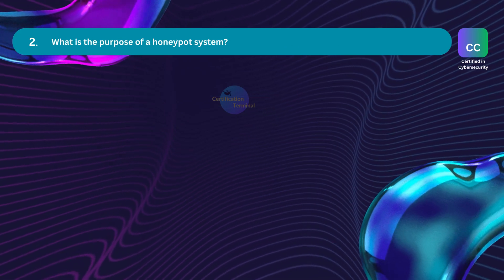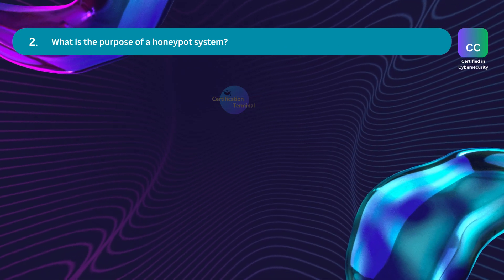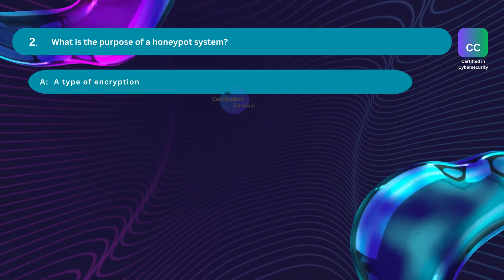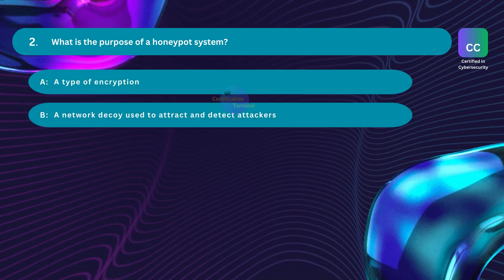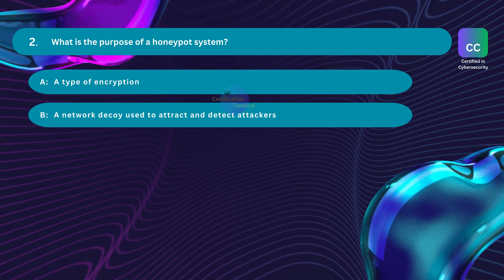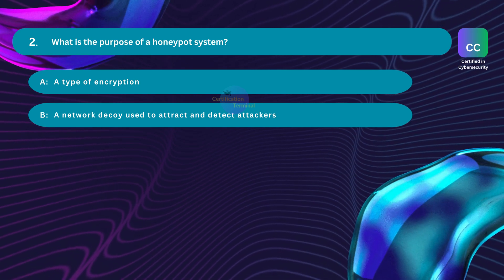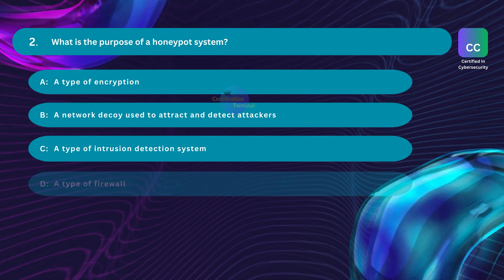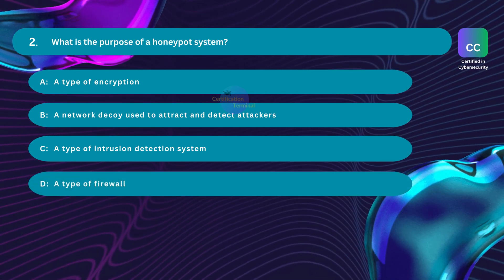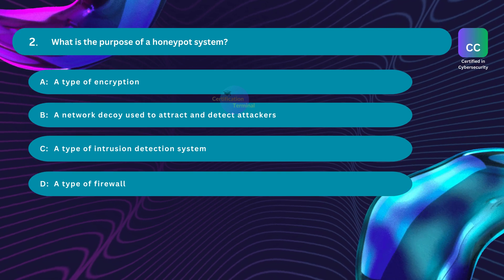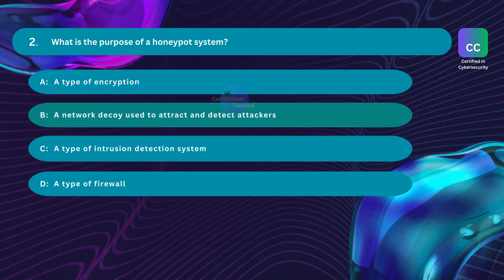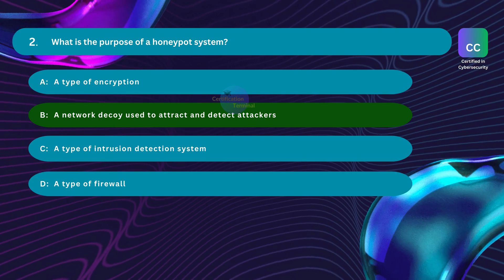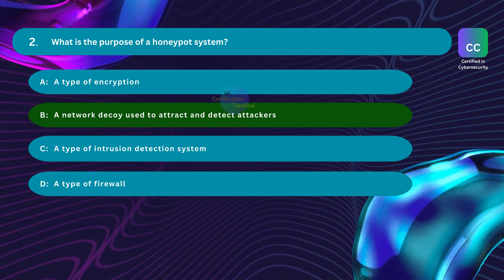Question number two: what is the purpose of a honeypot system? Option A: a type of encryption. Option B: a network decoy used to attract and detect attackers. Option C: a type of intrusion detection system. Option D: a type of firewall. The correct answer is option B: a network decoy used to attract and detect attackers.